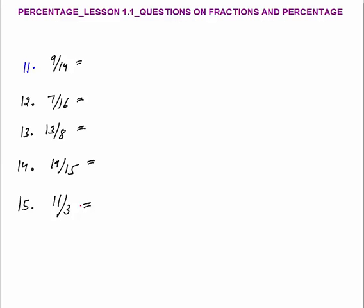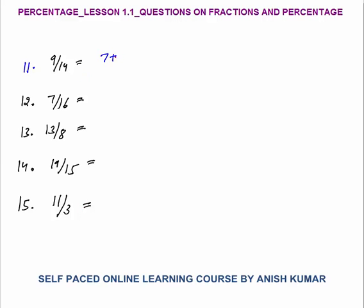Please try to solve questions 11 to 15 verbally or with minimum writing. 9 by 14: break as 7 plus 2 by 14. So 7/14 is half, plus 2/14 which is 1/7. Half means 50%, and 1/7 is 14 and 2/7% from the previous lesson. So the answer is 64 and 2/7%.